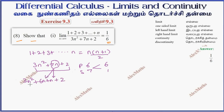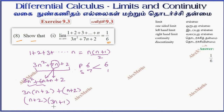Taking common: from 3n² plus 6n we get 3n(n+2), and from n plus 2 we get 1(n+2). So n plus 2 is common, giving the factorization (n+2)(3n+1).